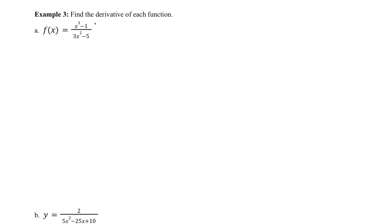Here in this video, we're going to find some derivatives using the quotient rule, and I'll do it a couple different ways — I'll use both the formula and my fun rhyme. So here I've got f of x equals x cubed minus 1 divided by 3x squared minus 5. I'm going to call the top part of this rational function t, and I'm going to call the bottom part b.